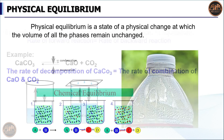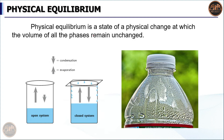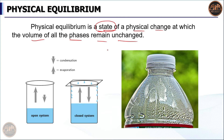Now let's look at physical equilibrium. Physical equilibrium is a state of physical change at which the volume of all phases remains unchanged. Physical states are solid, liquid, and gaseous. If you change the physical state of a substance, that process reaching balance is called physical equilibrium.